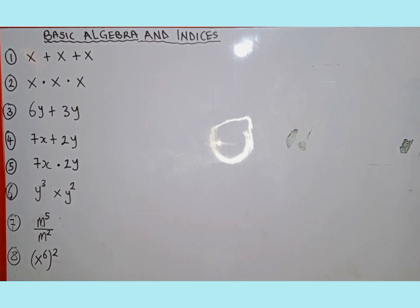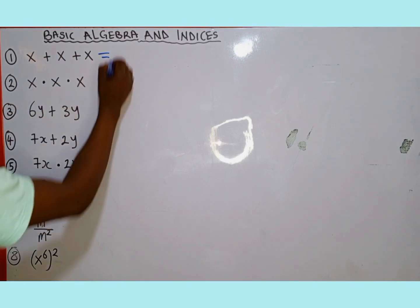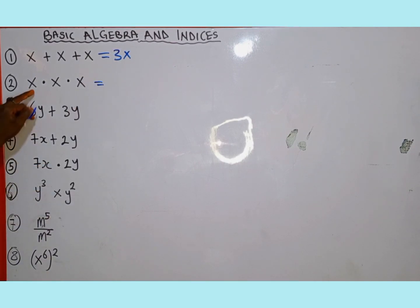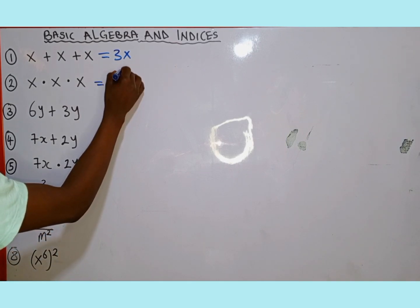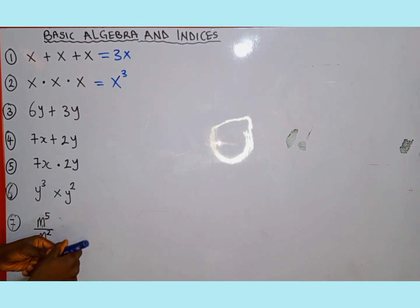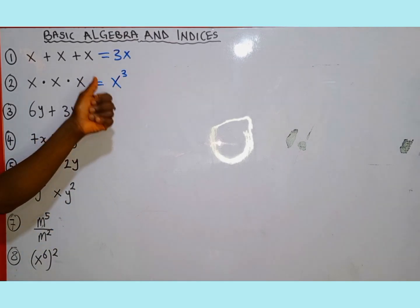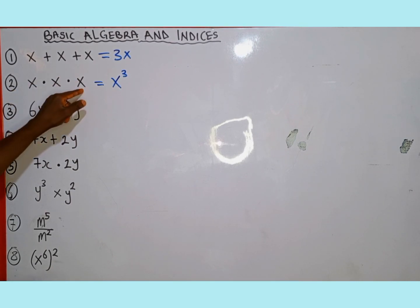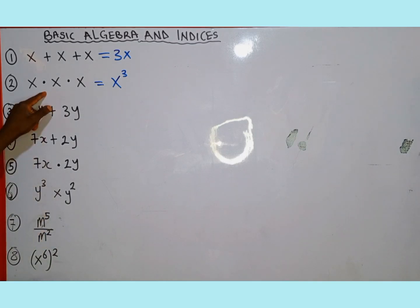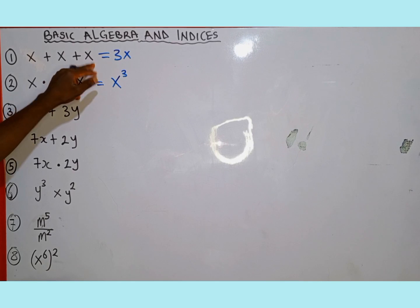Number one, we are given x plus x plus x. This is one x adding to another x, then adding to another x, which gives us 3x. Number two, we have x multiplied by x multiplied by x, which is going to give us x to the power of three, because x is the base raised to the power of three — x is multiplied by itself three times. So in the case of multiplication it is x to the power of three, but in the case of addition, if you are adding x together it is going to be 3x.